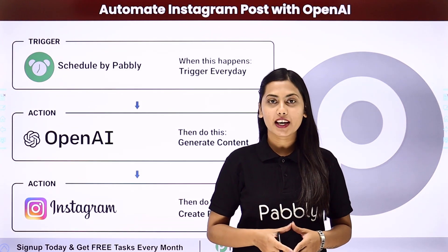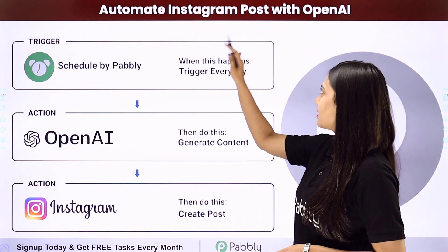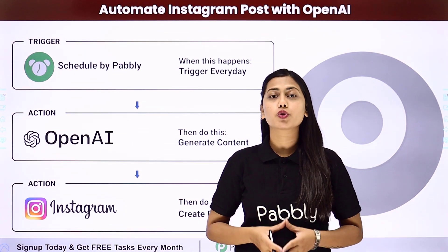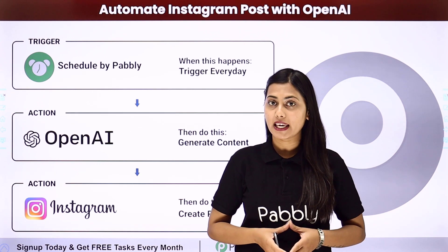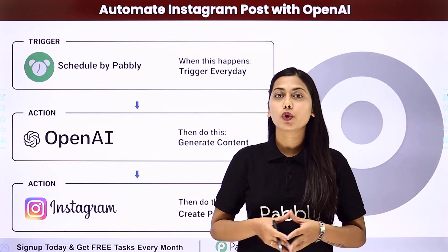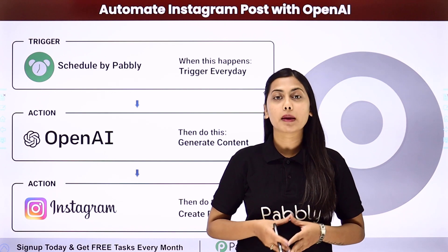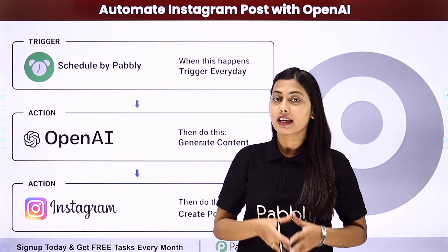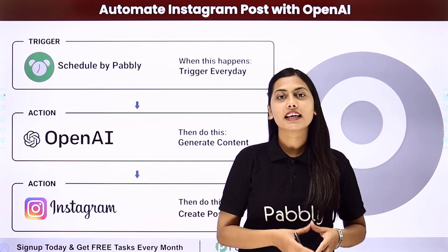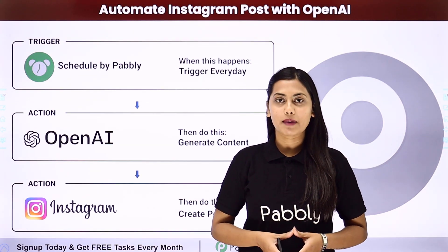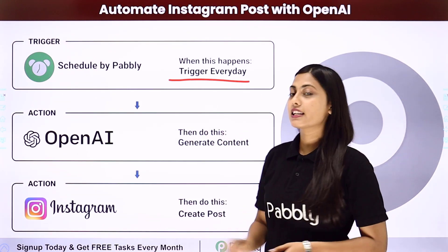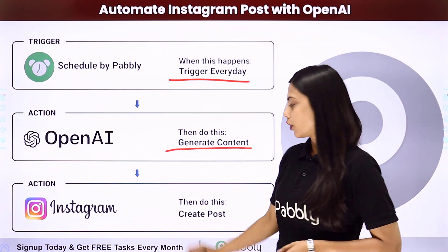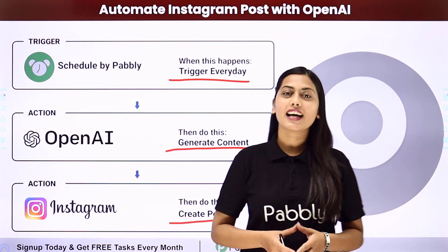Hello everyone. In this video we are going to learn how to automate Instagram posts with OpenAI. If you want to make sure that every day a single post is uploaded on your Instagram page, you can use this automation. We will use Pably Connect, where first we put a schedule trigger for daily posting, then generate content using OpenAI, and then create the post on Instagram.